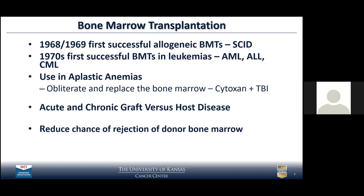At that time, the mantra was to give industrial-strength chemotherapy with high doses of cyclophosphamide and total body irradiation to obliterate the patient's bone marrow and the underlying malignancy, then replace it with cells from a donor. Because of lack of good matching — HLA typing wasn't yet being used in bone marrow transplantation — there were serious problems with horrendous graft-versus-host disease, both acute and chronic, as well as an increased problem with rejection of bone marrow in those early days.